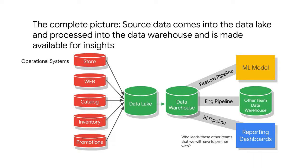Here are three quick examples of the kinds of analytics teams that often build pipelines to get data from our data warehouse. You might have a machine learning team who wants to build a pipeline to get features for their models. You might have another data engineering team that's using our data as part of their data warehouse. Or you might have a business intelligence team that wants to build dashboards from some of our data.